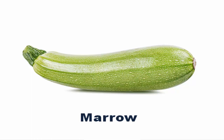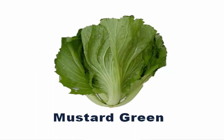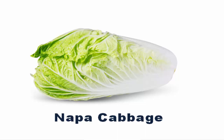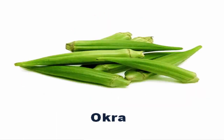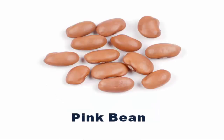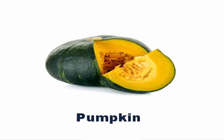Malabar spinach. Marrow. Molokhia. Mustard green. Mung bean. Napa cabbage. Neep. Okra. Onion. Pink bean. Potato. Pumpkin.